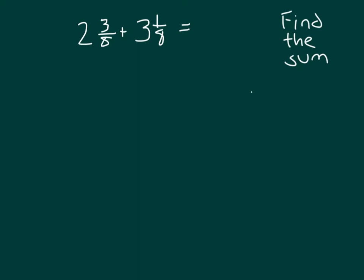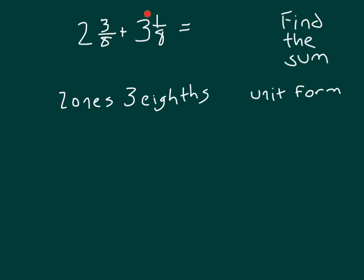It might help us to think about this within unit form. The first number is two ones along with three eighths. The second is three ones along with one eighth.